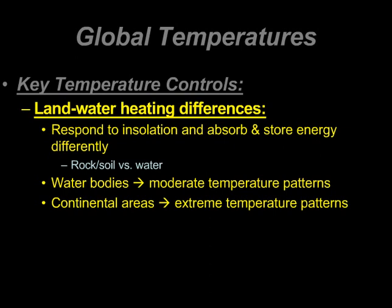Places along a water body are not going to have a very big change in their temperature throughout the day or throughout the year, compared to a place at the same latitude and same elevation but deep within a continent — they're going to have a much higher high and a much lower low. The most important idea here, probably in this entire video lecture 2.7, is simple: land heats up but cools down faster than water.